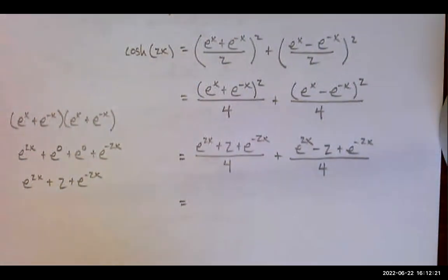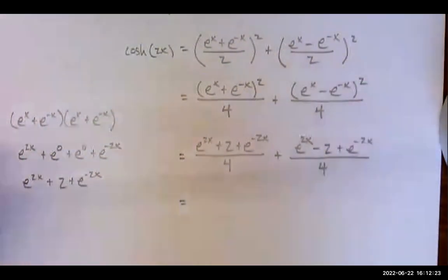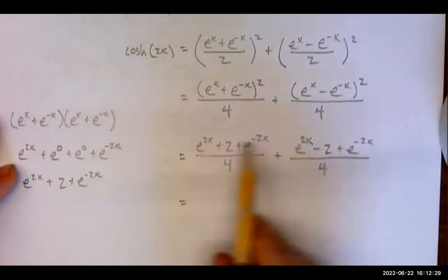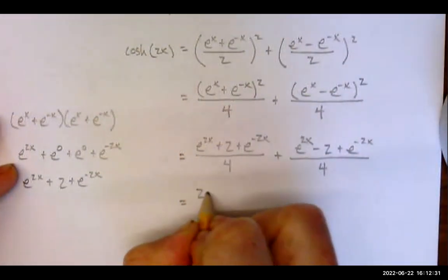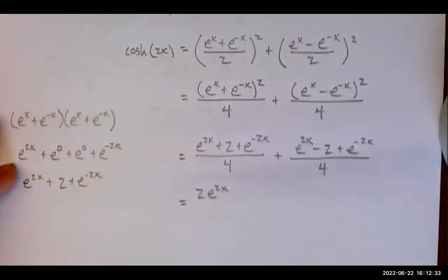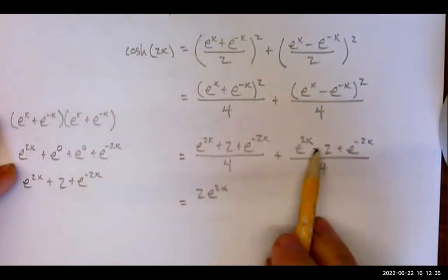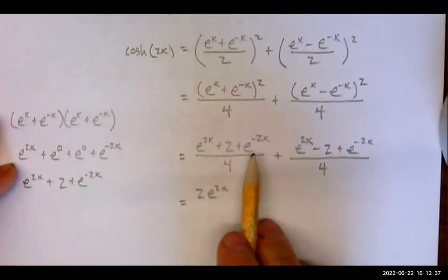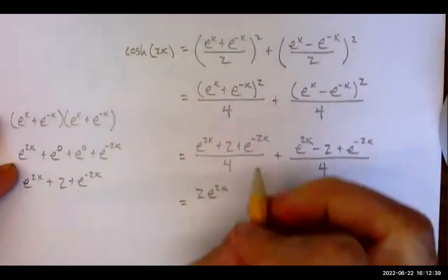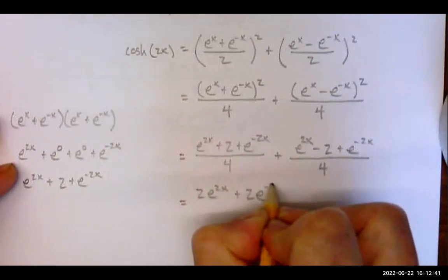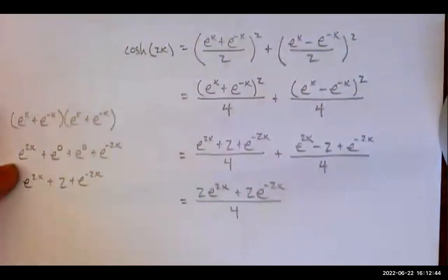e to the 2x when we foil, and because of the negative, we're subtracting both those in the middle. Doing well. Notice they both have a denominator of four. That's awesome. We can combine them together. Okay, how's that going to work? e to the 2x plus e to the 2x, 2e to the 2x. The 2s cancel. e to the negative 2x, e to the negative 2x plus 2e to the negative 2x over four.